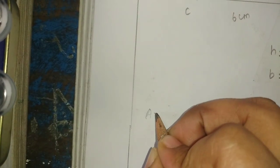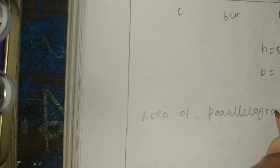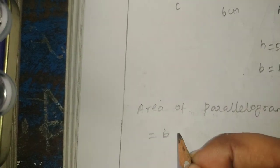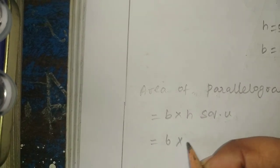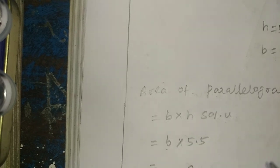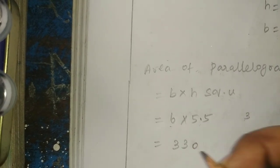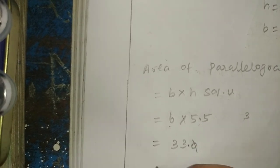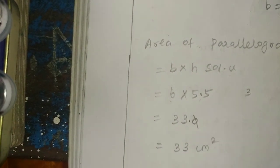Now what is the formula? Area of parallelogram. Area of parallelogram equals base into height square units. Base is 6, height is 5.5. So 6, 5s are 30, zero, balance 3. 6, 5s are 30, 30 plus 3, 33. The answer is 33 cm square.